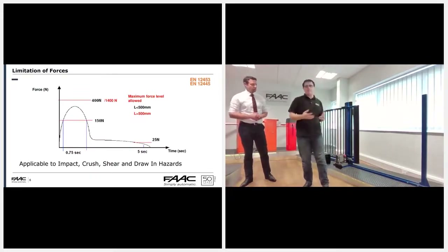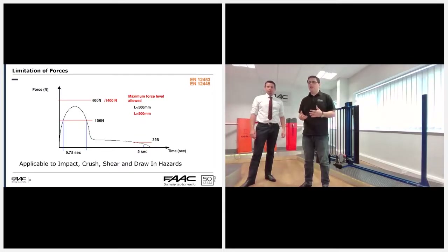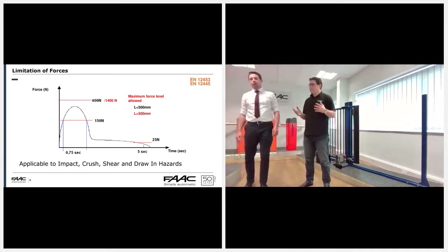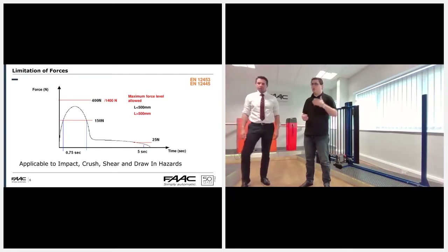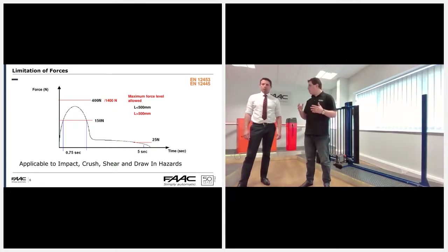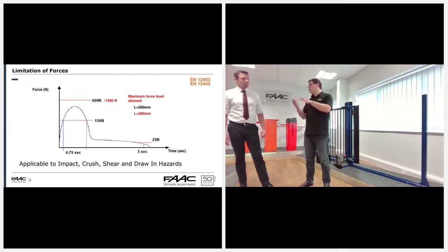Once you've decided on safety edges or encoders, you also need to measure the forces. There are two key maximum allowable forces. The main one, shown in red, is 1400 newtons — that's the impact everywhere. When you get into the crushing or shearing zone, it goes down to 400 newtons. Force tests start measuring when forces go above 150 newtons. You then have 0.75 of a second to drop below 150, and a further 4.25 seconds to drop below 25 newtons, remaining below 25 newtons after that.